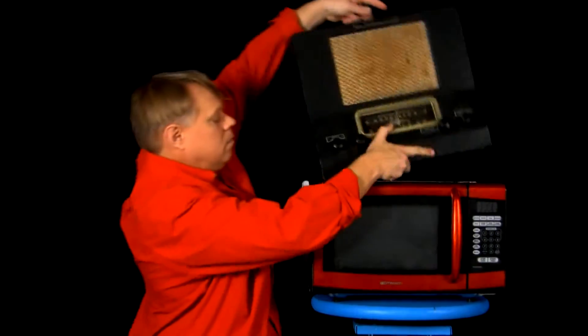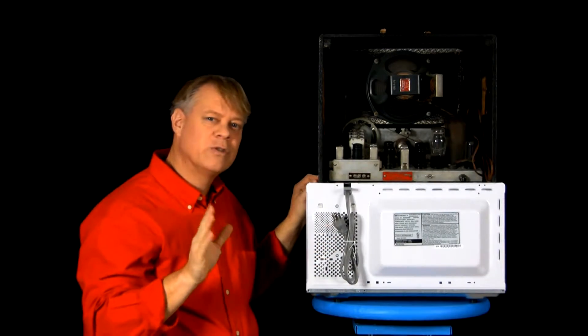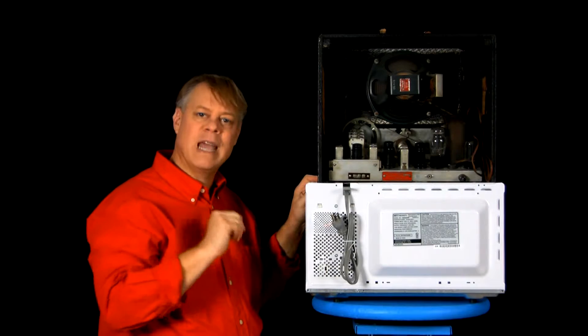Now if you picture a vacuum tube at all, it's likely in a radio like this. Inevitably, tiny transistors and microchips replace clunky vacuum tubes, but it's too soon to relegate them to the museum.